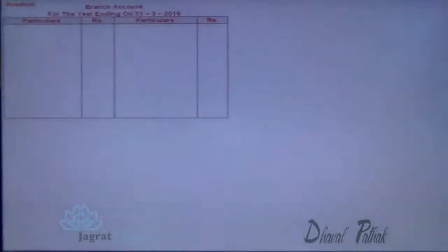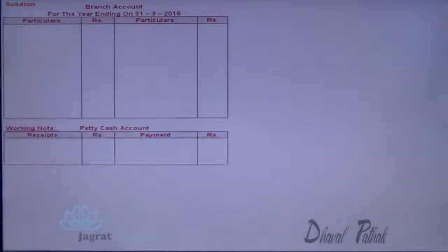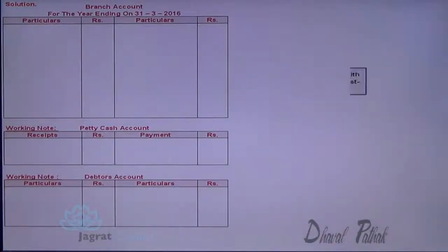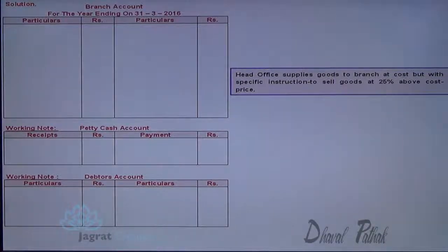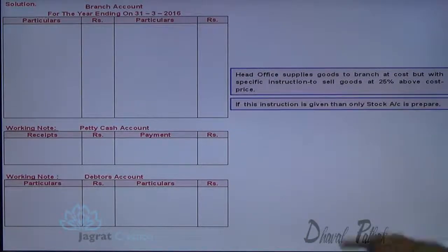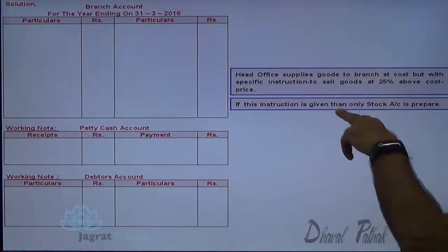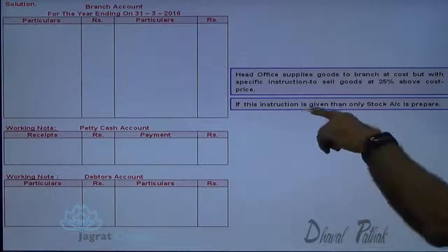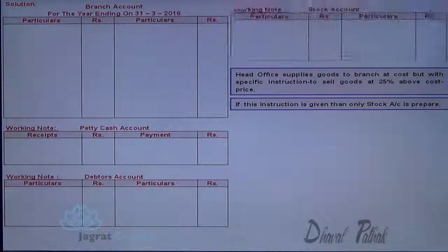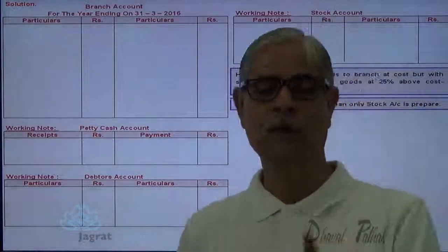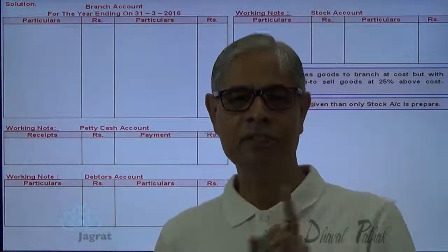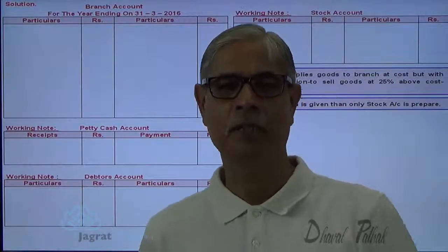Now let me start — this is the branch account, working note petty cash account, and debtors account. Head office supplies goods to branch at cost with a specific instruction to sell goods at 25 percent above cost. In such a situation, you should always prepare a stock account in the working note to find out the closing stock, which is the missing item.